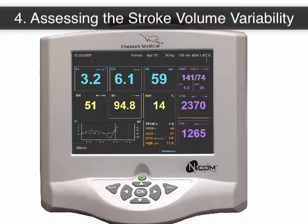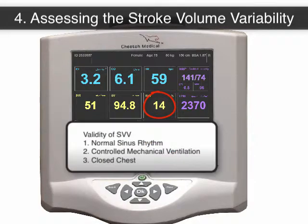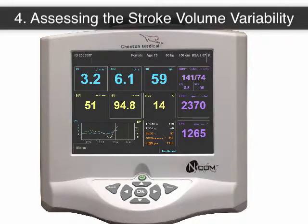The NICOM is able to monitor and calculate the variation in the stroke volume over time. Three criteria must be met to use the NICOM stroke volume variability as an indicator of fluid responsiveness. One, the patient must be in normal sinus rhythm. Two, the patient must be under controlled mechanical ventilation. And three, it applies only for patients with a closed chest. An increase in variability of the stroke volume of greater than 10% suggests that the patient is on the ascending limb of the Frank-Starling curve and is likely to increase their stroke volume, cardiac output, and organ perfusion with additional fluid administration.